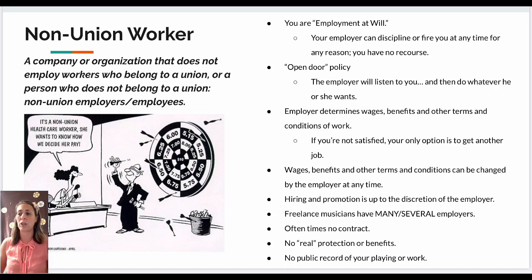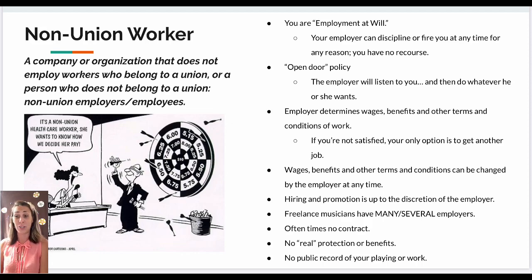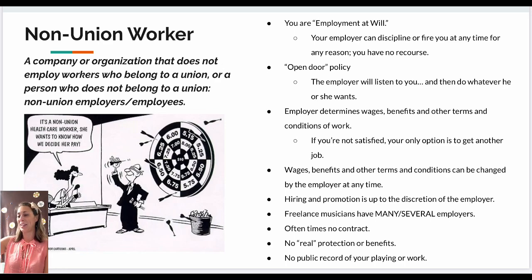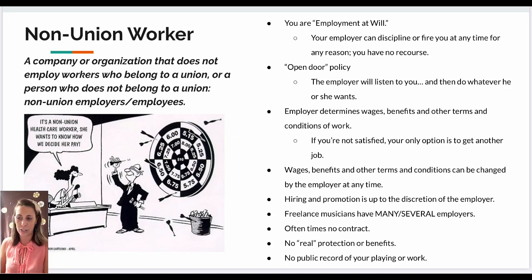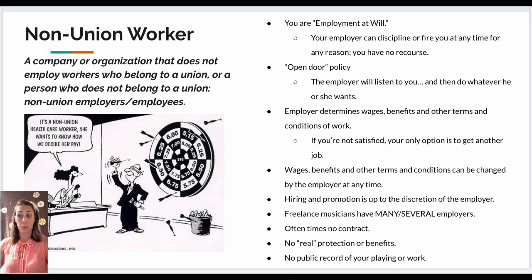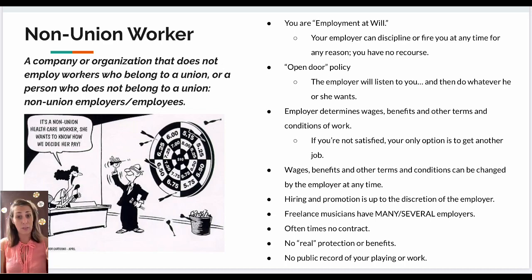There's a little joke on the bottom left about a non-union healthcare worker trying to figure out her pay — a man with a bow, blindfolded and turned around backwards, just randomly choosing: 6%, 5.25%. Basically there are no protections, which is why the union has been around so long to help professional musicians. If you're a non-union worker, you are in employment at will. Your employer can discipline or fire you at any time for any reason and you have no recourse. It's an open-door policy — the employer will listen and then do whatever he or she wants.